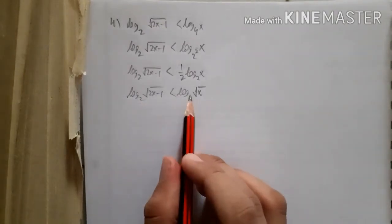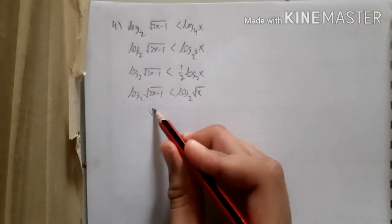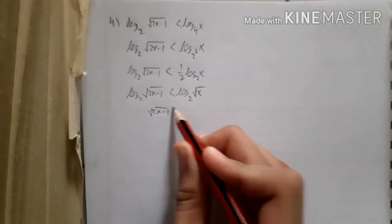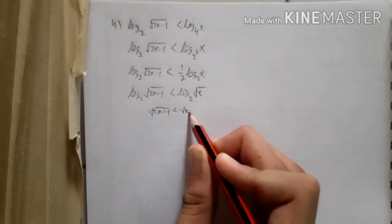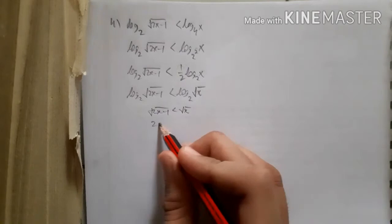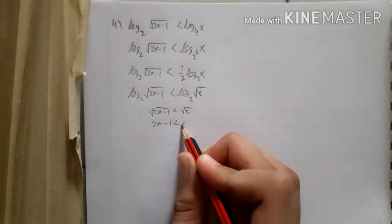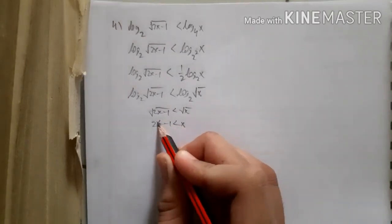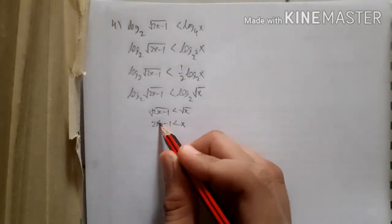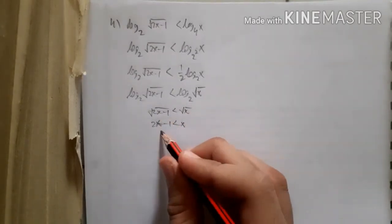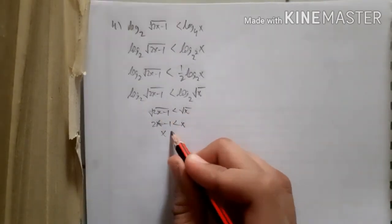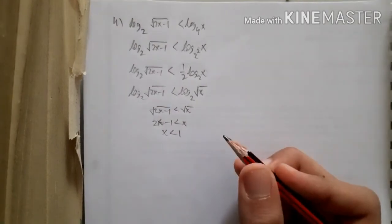With equal bases, we compare the contents: √(2x − 1) < √x. Squaring both sides gives 2x − 1 < x, so x < 1.